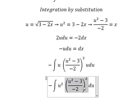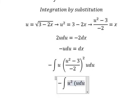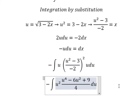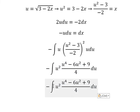This one we need to expand and we have u to the power of 4 minus 6u square plus 9 over number 4. So I will put number 4 outside.